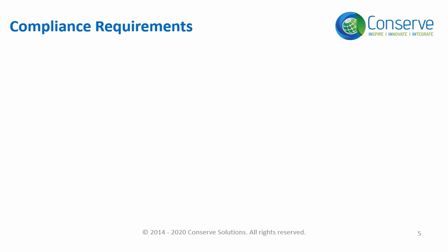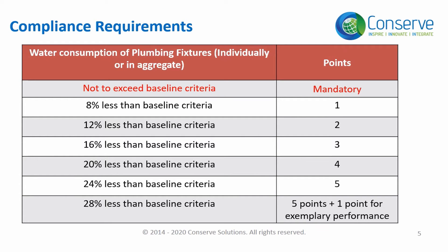The mandatory requirement is that water consumption of plumbing fixtures, individually or in aggregate, should not exceed the baseline criteria. Aggregate here refers to total water consumption. The baseline criteria is as per the table in Uniform Plumbing Code India. If water consumption is less than the baseline, points are awarded based on percentage reduction of water consumption from the baseline. Projects can earn up to five points and one bonus point under exemplary performance in this credit.